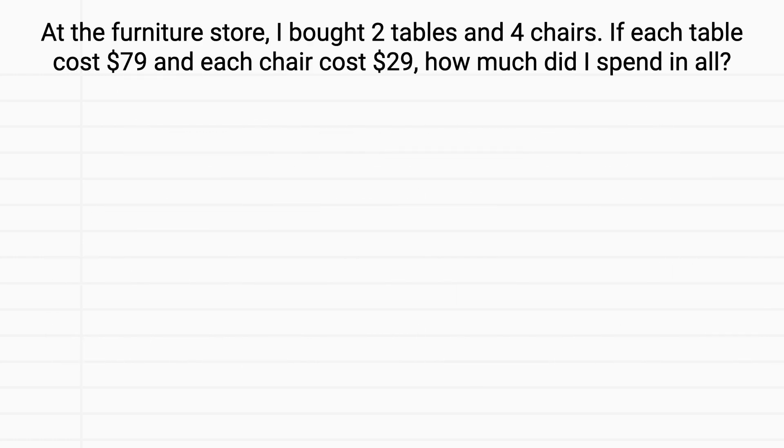So in this problem, I buy two tables. I could draw a table and label it table 1. Then here's table 2. I also buy some chairs. I'll label this chair 1. Then we have chair 2, chair 3, and chair 4. This is everything I bought at the store.